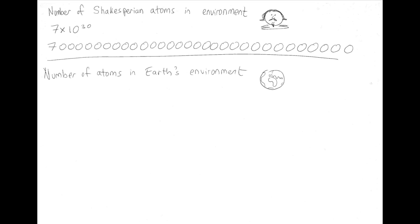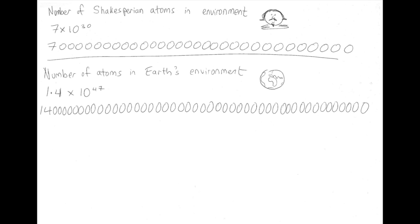The team also worked out that, including the Earth's lower atmosphere, the oceans, the land mass, and all the flora and fauna on the land mass, the Earth's environment probably has about 1.4 times 10 to the 47 atoms in it — that's 14 with 46 zeros after it. Another easily relatable number, I'm sure we'll all agree.